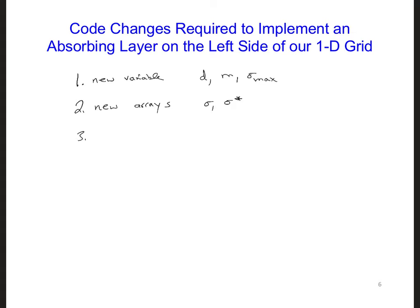And three, since the coefficients depend on the conductivity, and those change spatially, the coefficients cA, cB, dA, and dB need to be turned into arrays also.